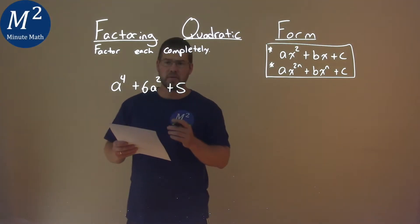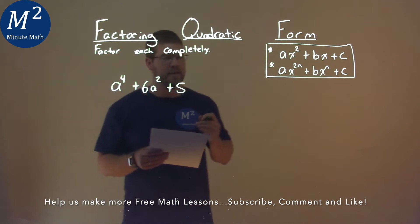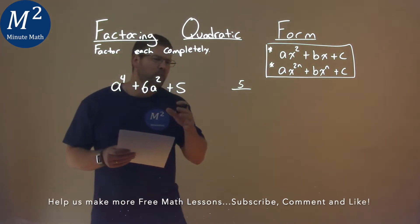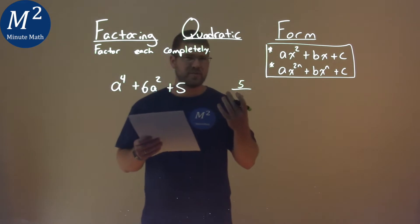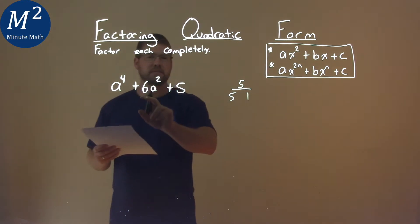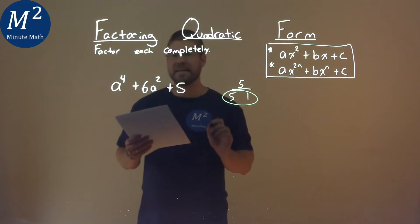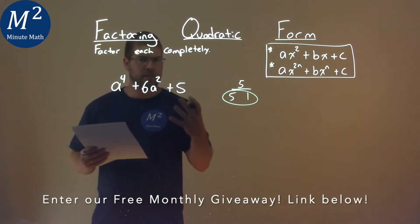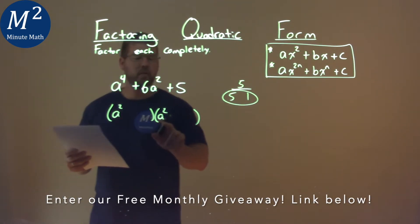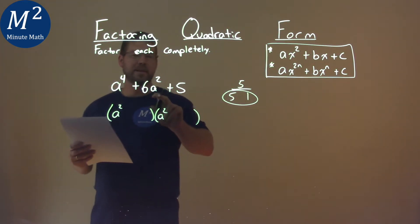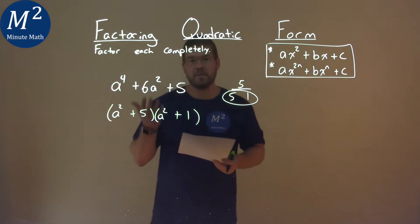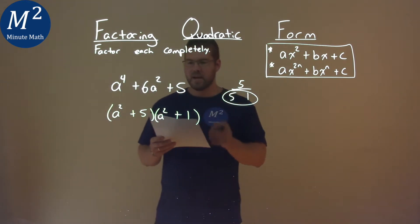We're given this problem right here: a to the fourth power plus 6a squared plus 5, and we need to factor completely. I look at my c value, which is 5, and I want to find two numbers that multiply to be 5. Well, that's just 5 and 1. And then we want to find two numbers that add to be 6 — clearly, the 5 and the 1. Now, remember this is a quadratic form. We have a squared and a squared form here. When they multiply, it gets us a to the fourth, but when we add them, we get something that's a squared. We just put the 5 and the 1 here, and our final answer is a squared plus 5 times a squared plus 1.